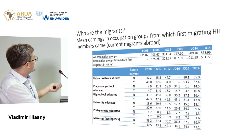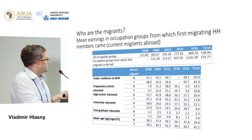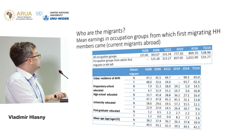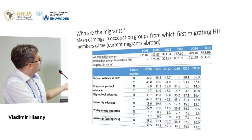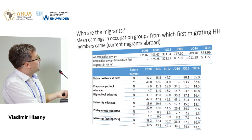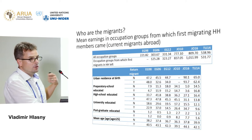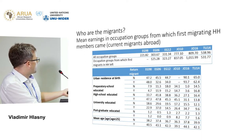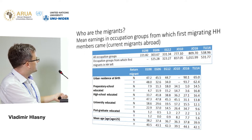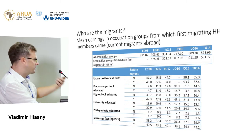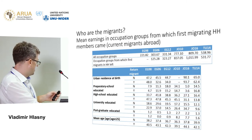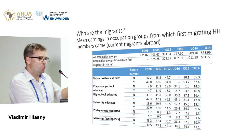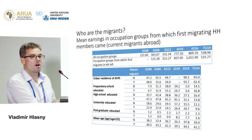Regarding urban residence at birth, typically we find that migrants are more likely to be from rural areas, except for Jordan — again, Jordan shows a completely different pattern of migrant backgrounds than Tunisia and Egypt. We see that also about their education level: Jordanian migrants are much more likely to be college educated than non-migrants, whereas in Egypt and Tunisia, it's the less educated individuals who tend to migrate. Mean age shows that people who have already gone through migration are older than those who have not, which creates the concern that we need to control for age to really distinguish non-migrants from not-yet-migrants.